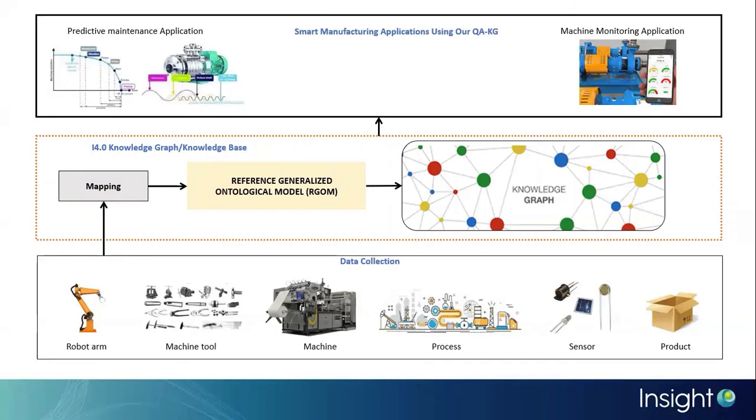Upon mapping, the Industry 4.0 production line knowledge graph is built. The knowledge graph is then accessed by any application developer on the shop floor.